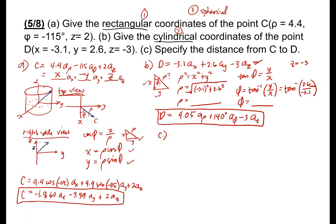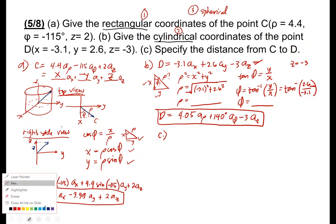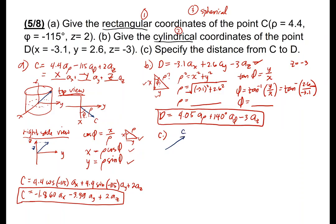Specify the distance from C to D. We have two vectors, vector C and vector D, and we're looking at the distance between points C and D. The distance formula using rectangular coordinates is the square root of (XD − XC)² plus (YD − YC)² plus (ZD − ZC)².